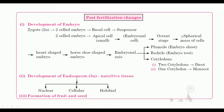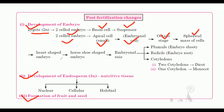Post-fertilization changes include: development of the embryo, development of the endosperm, and formation of fruit and seeds. Development of the embryo: zygote formation → two-cell embryo (basal cell and suspension cells; apical cell and embryonal cell) → octant stage → spherical mass of cells → heart-shaped embryo → horseshoe-shaped embryo → embryonal axis having plumule, radicle and cotyledons. Two cotyledons for dicotyledons and one for monocotyledons. The development of the embryo occurs in a stepwise manner.